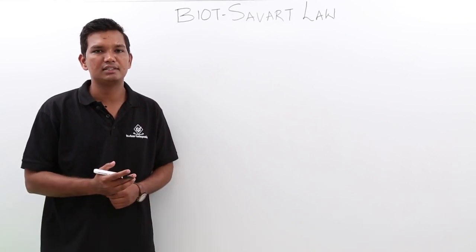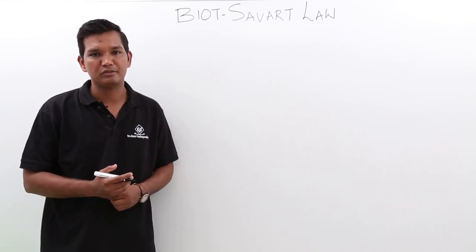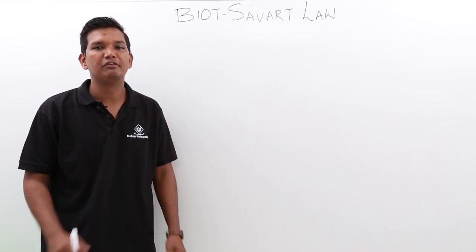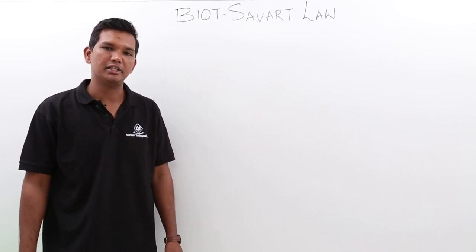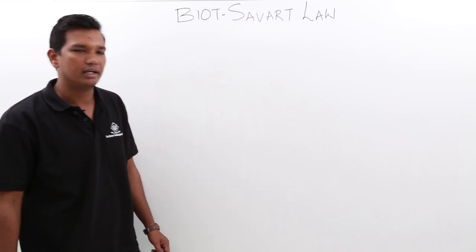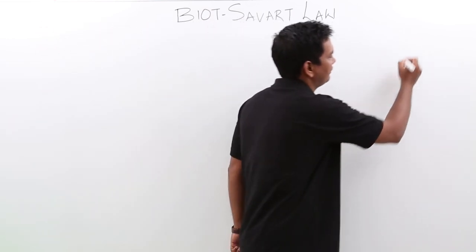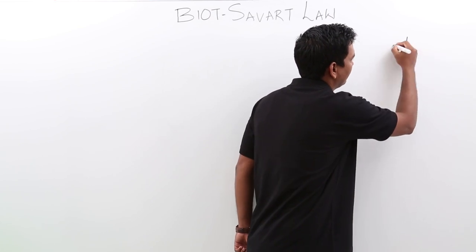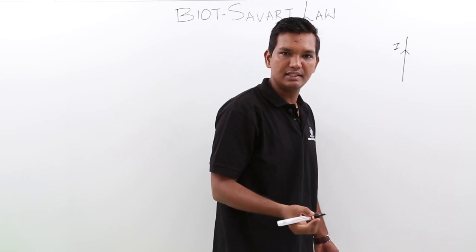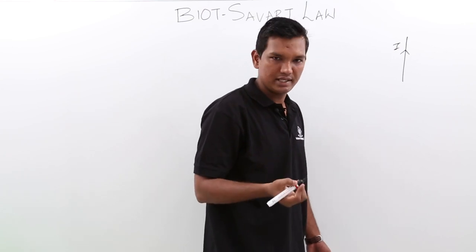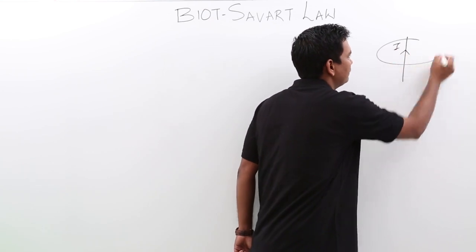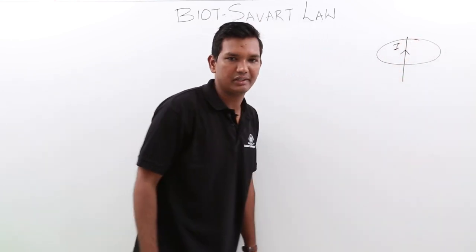In this class we will discuss Biot-Savart law. Biot-Savart law is used to find the magnetic field intensity at any point in space. If we have a current-carrying conductor, the current can be either a DC current or AC current, and there will be magnetic field lines forming concentric rings.